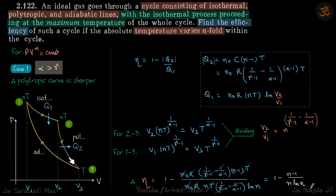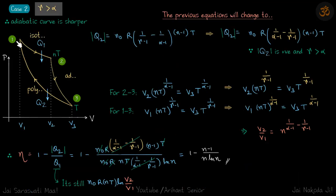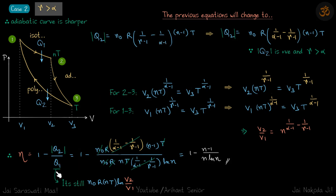Now let's take the other case where the adiabatic curve is sharper and the polytropic curve is less steep. The efficiency is again 1 minus q2 by q1. In both cases, q1 comes from the isothermal process and q2 from the polytropic process. So q1 is still n₀RT ln(v2/v1) and q2 is still n₀·C·ΔT, even though the geometry looks different.